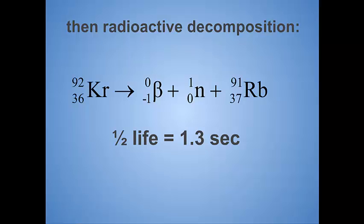The half-life of this reaction is 1.3 seconds. That means if you have 100 atoms of krypton-92, after 1.3 seconds, you'll have 50 left. The other 50 will have decayed to rubidium-91. After another 1.3 seconds, you'll have 25 left, half of what you just had. After another 1.3 seconds, you'll have 12 and a half atoms left, and so on. That's what half-life is. We're not going to spend too much time on half-life.